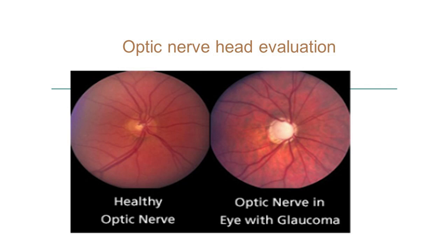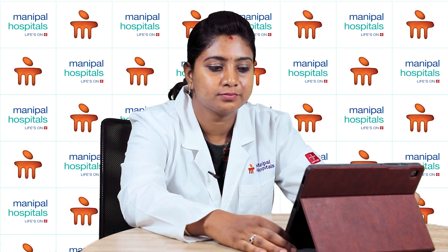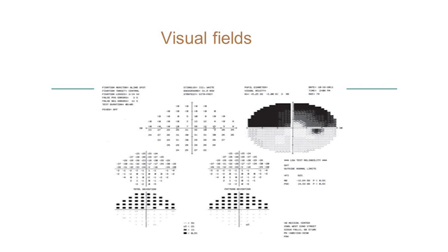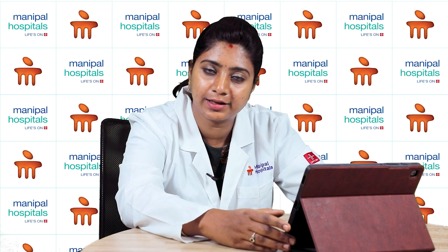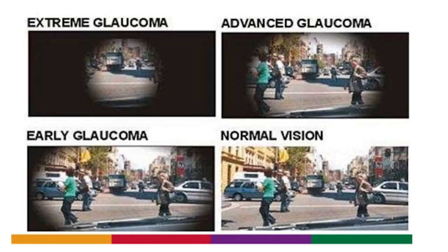In glaucoma, there is increased paleness of the optic nerve due to damage. The third test is the visual field test, where we test your field of vision — the extent you can see in all directions. Any loss can be detected with this test. In extreme glaucoma, there is concentric constriction of the visual fields, visible in the images shown. If you notice any such tubular vision, please get yourself checked for glaucoma.